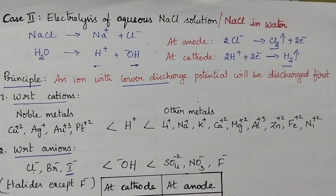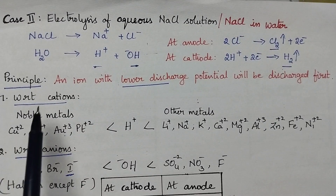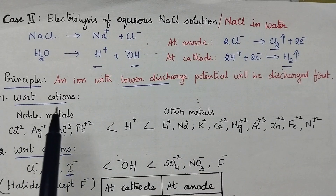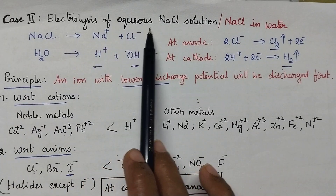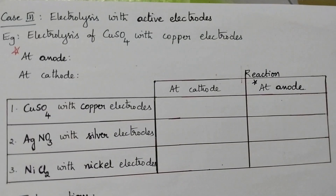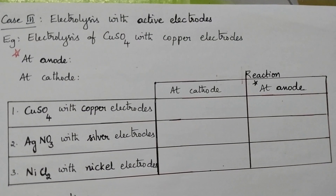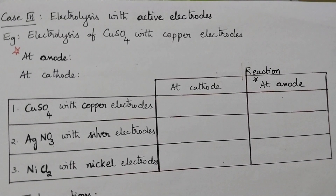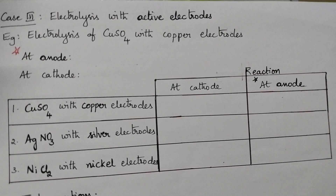So simply by following the two principles, we can predict what type of products will be formed during the electrolysis of any aqueous electrolytic solution. Now we are going to discuss about the special case. Till now we discussed about the electrolysis in the presence of inert electrodes. Inert electrodes means the electrodes are made up of platinum and graphite and they do not take part in a chemical reaction, so there will be no interference.